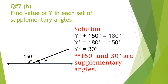The next question is to find the value of y in each set of supplementary angles. Here is the unknown angle y and the angle 150 degrees. We set y plus 150 degrees equal to 180 degrees. Moving 150 to the other side with a negative sign, we get y equals 30 degrees. So 150 degrees and 30 degrees are supplementary angles.